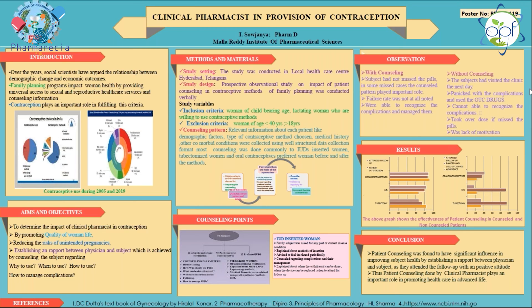For oral contraceptives, we first took patient history, as not all women can use contraceptives. For example, combined hormonal contraceptives are contraindicated when systolic BP is greater than 160 mmHg or diastolic BP is greater than 100 mmHg, because they increase the risk of stroke and myocardial infarction. The combination pill of estrogen and progesterone effectiveness also depends on the patient's health status and medical condition, and it is mostly preferred for younger women.